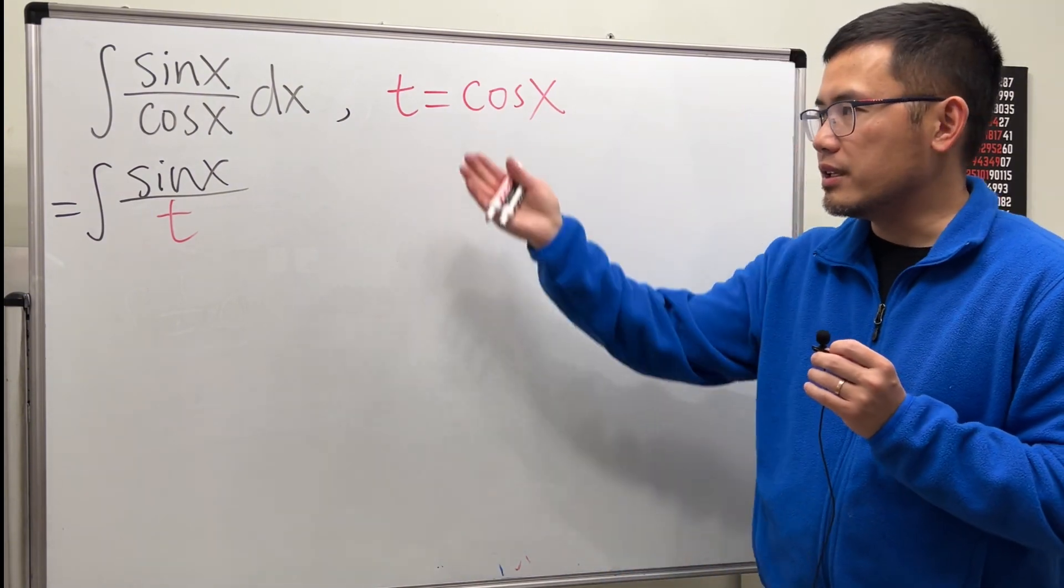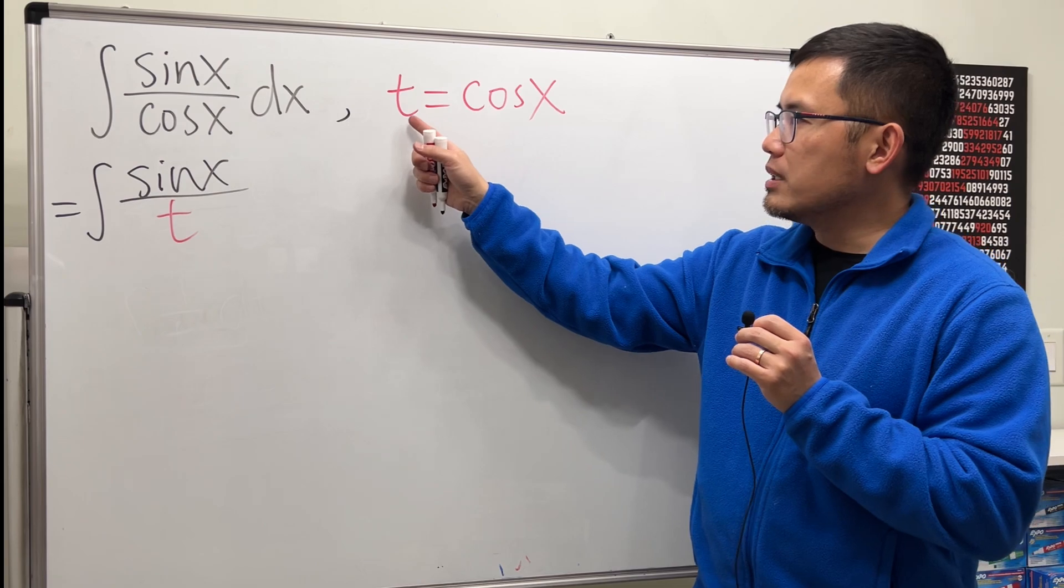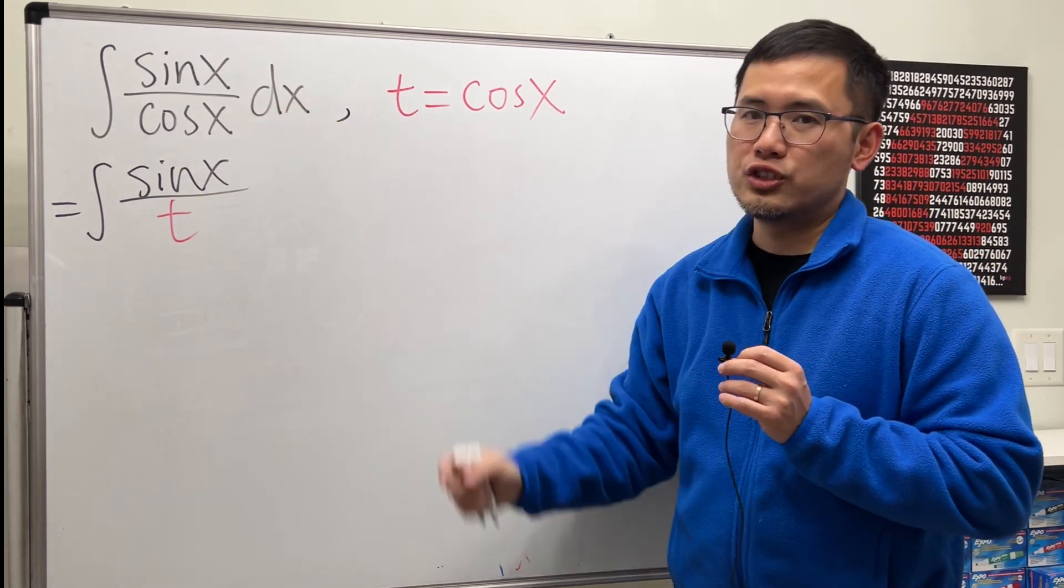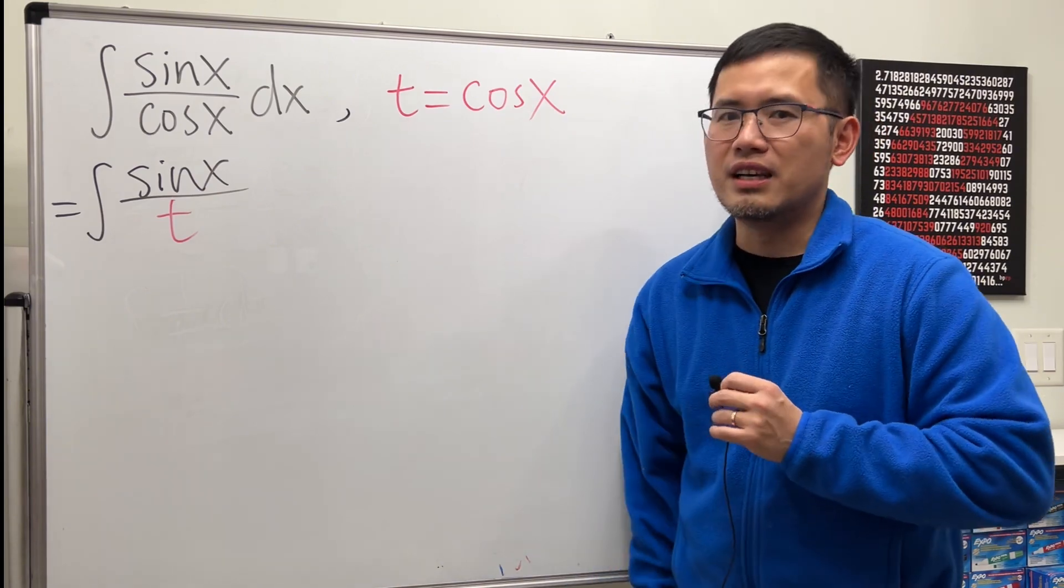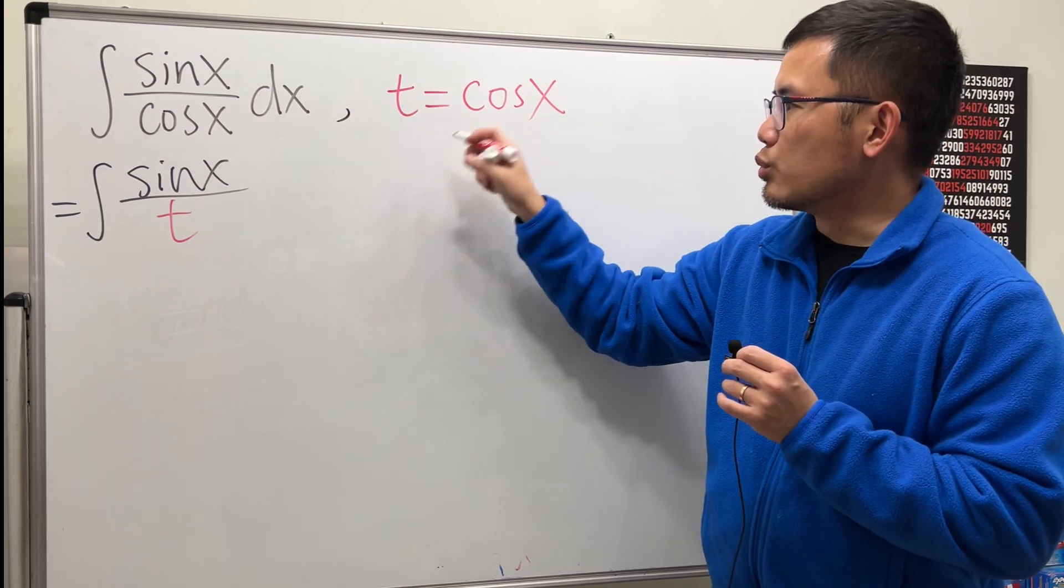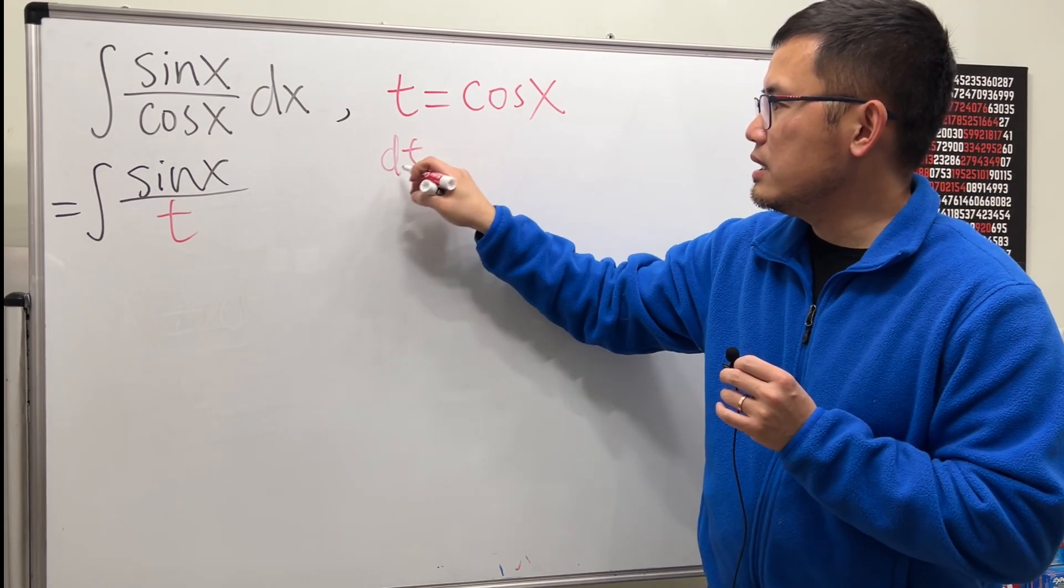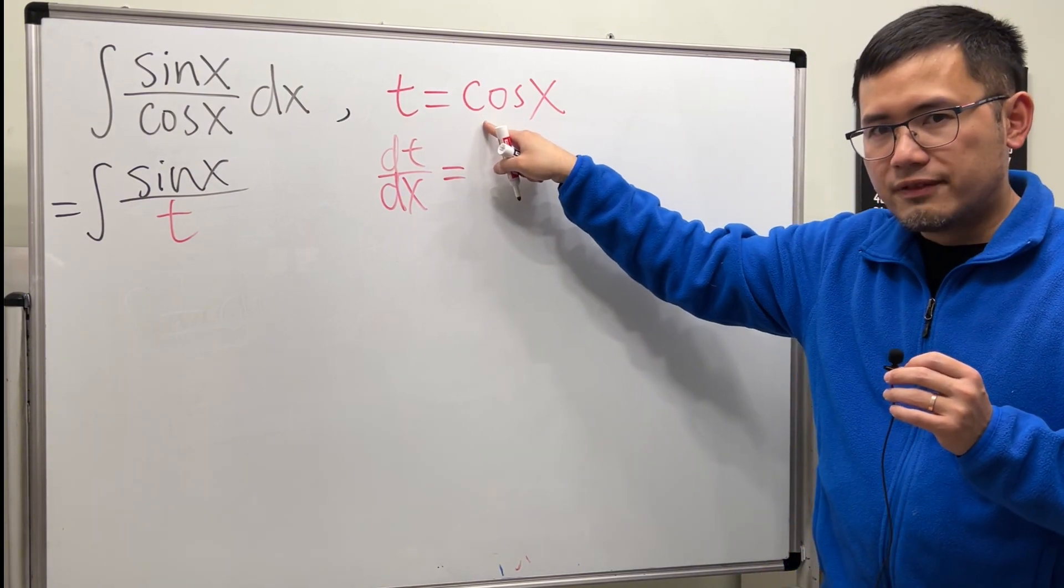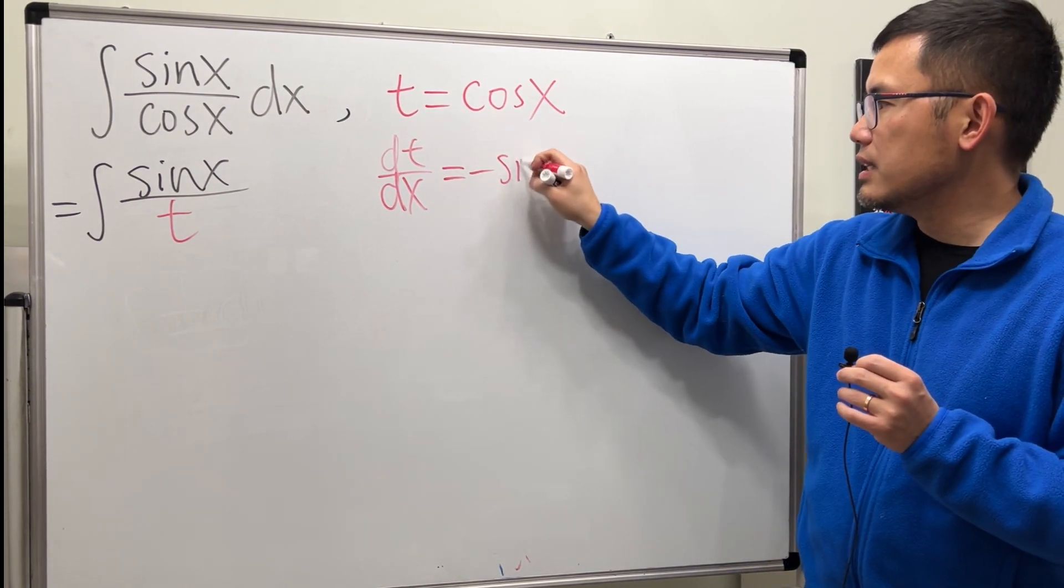Whenever we do a substitution in an integral, after we pick a variable to be one part of the integrand, we will have to differentiate both sides to squeeze out the dx. So, let's go ahead and do just that. Taking the derivative on both sides, we get dt dx equal to the derivative of cosine x is negative sin x.